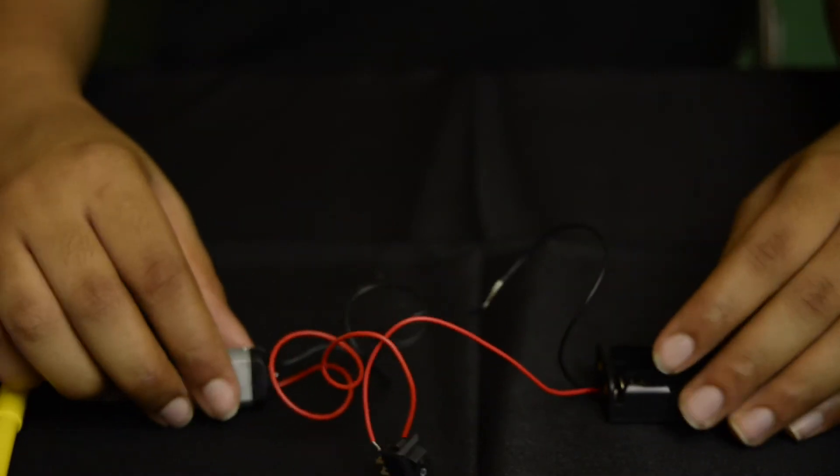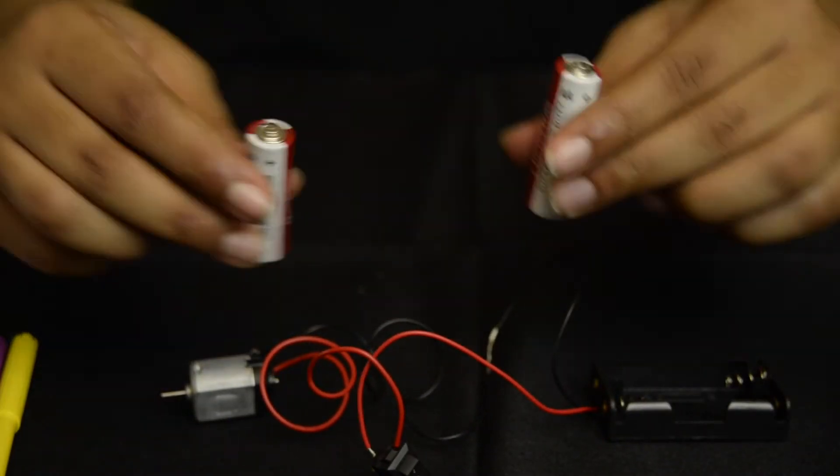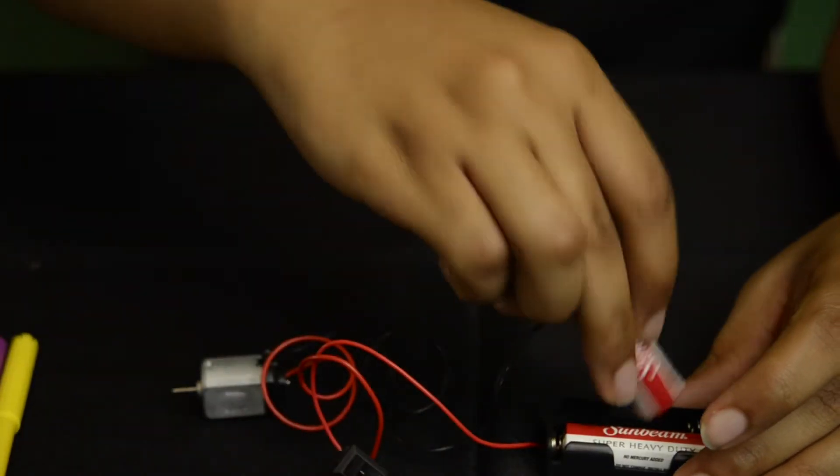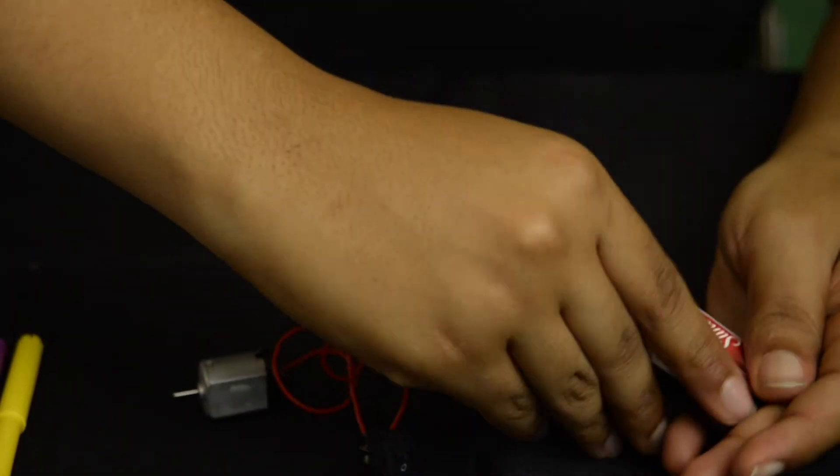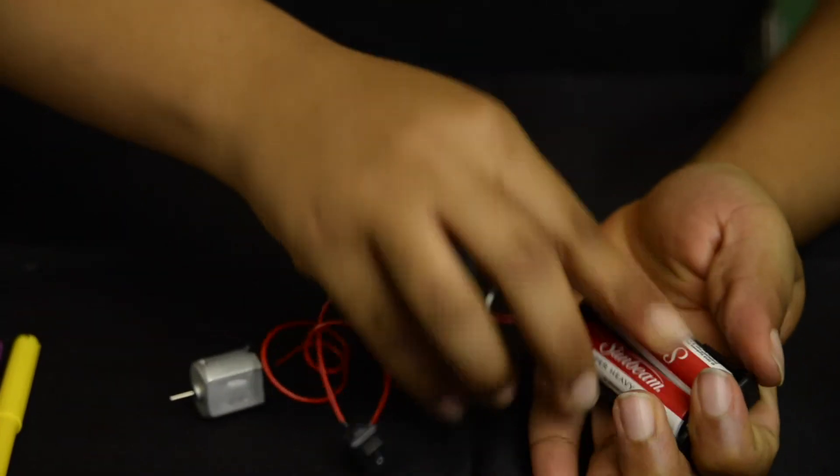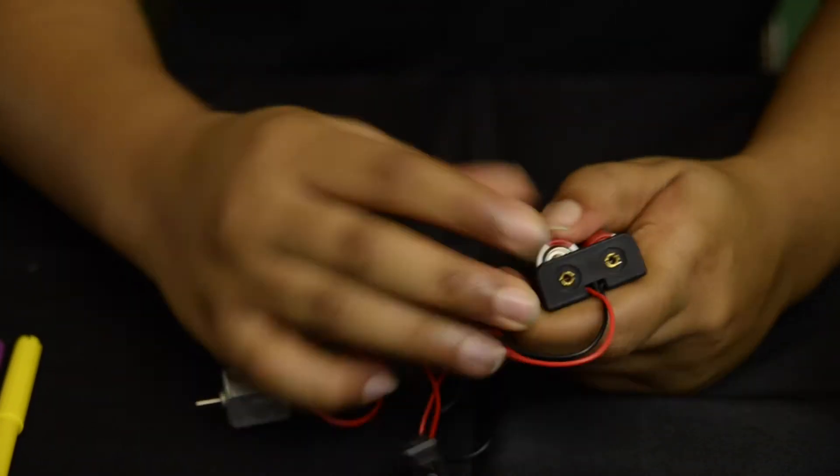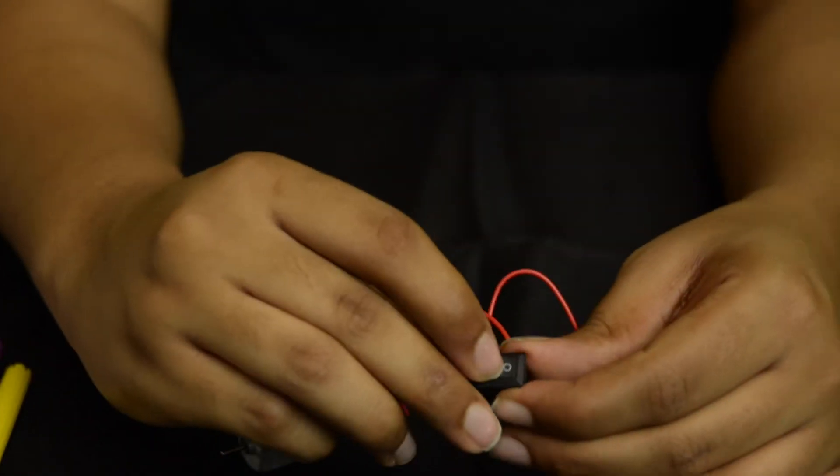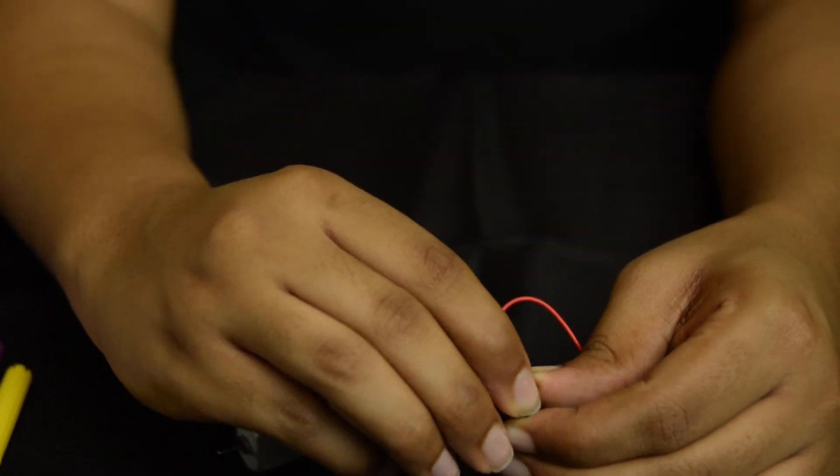Now place the two batteries into the pack and test out the circuit. Now flip that switch and the motor should run.